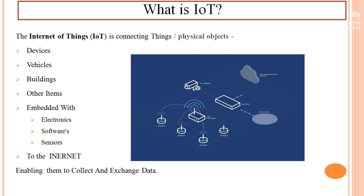Do you know about the internet? It is nothing but a connection of computers in one particular region to another region — it may be smaller or larger in size. For example, in a smaller office we connect systems to communicate with each other, forming a small network. If we connect systems from remote areas, we increase the network size. All around the world, networks are interconnected to form communication between every computer — that is called the internet.